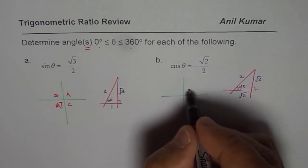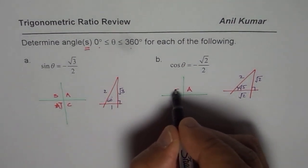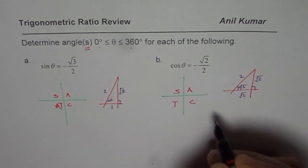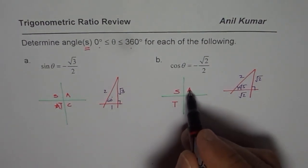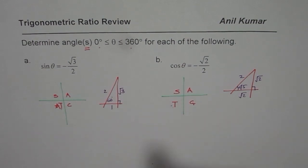Cost rule: all are positive in quadrant 1, sine in 2, tan in 3 and cosine in 4. All students take calculus, all silver teacup, or the cost rule.